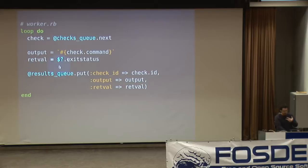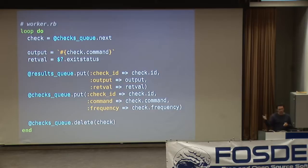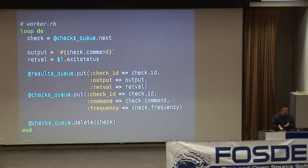It takes the output and puts it onto the results queue as a result, setting the check ID, output, and return value. The fancy thing it does is take the same check and recreate it on the Beanstalk tube at the very end, with a delay set on it. BeanstalkD won't make that check available to other workers until that timeout has happened — for instance, if the frequency is set to 30 seconds, the Beanstalk won't make that job available for 30 seconds. Then it deletes the check off the queue and does the next thing.